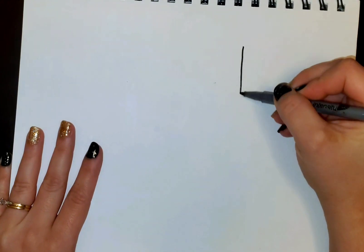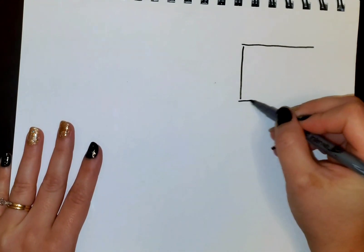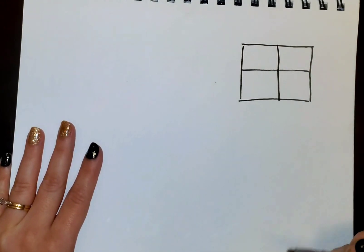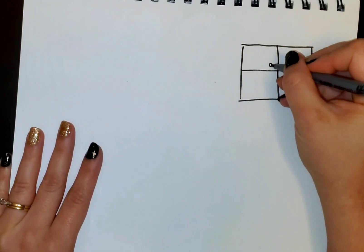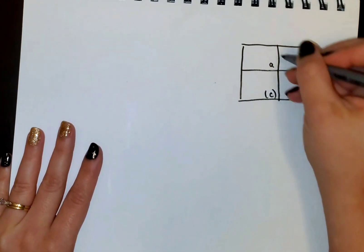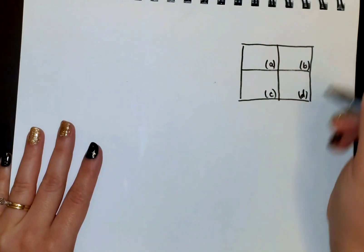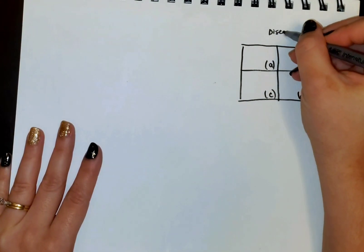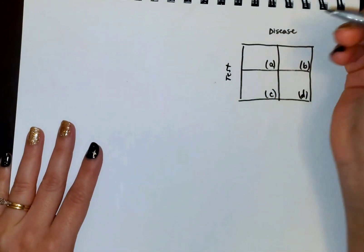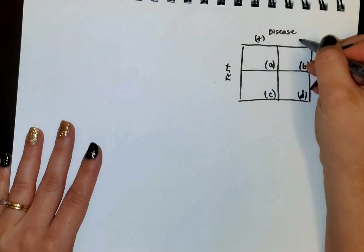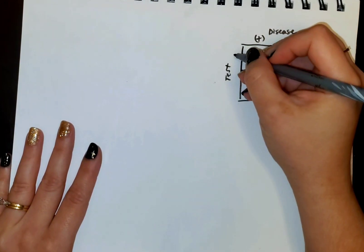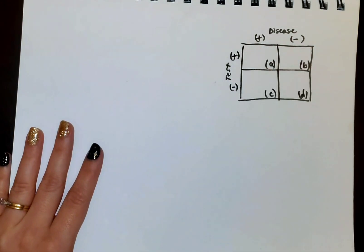So we're going to start off making this table with four parts. We're going to label those four parts A, B, C, and D in this order. On top of that table we will write disease and on the side we'll write test. That disease status can be positive or it can be negative. The test result could be positive or it could be negative.